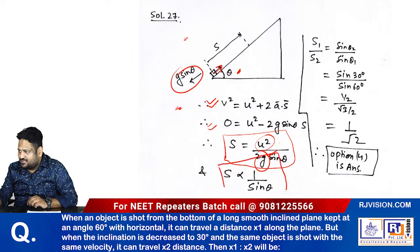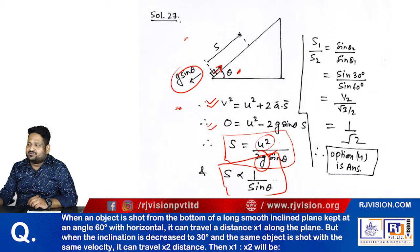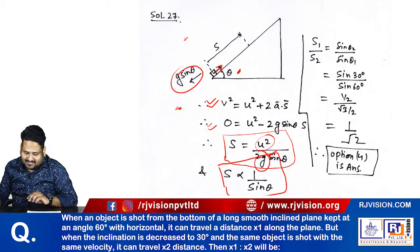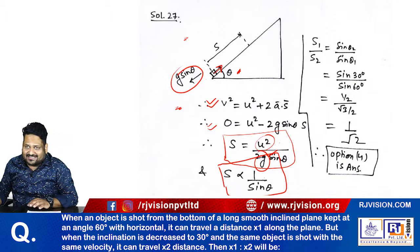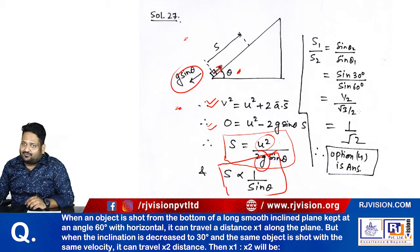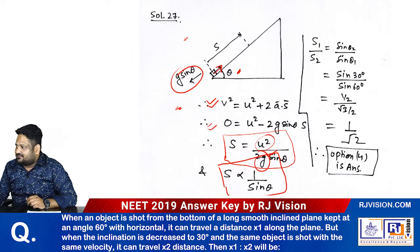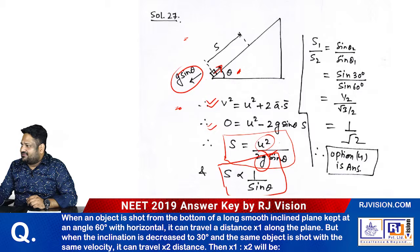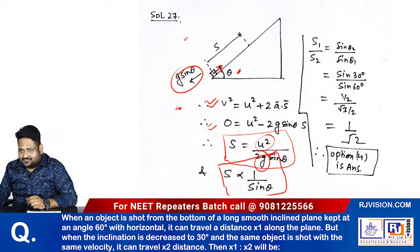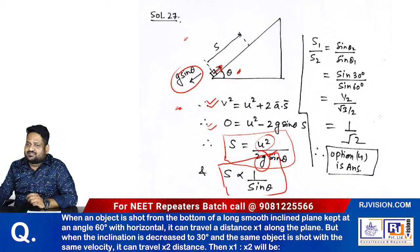It means for this particular equation, s is inversely proportional to sin theta. Here s is given in terms of x, so s1/s2, or you can say x1/x2, is equal to sin theta 2 divided by sin theta 1. Substitute the angles: theta 1 equals 60 degrees, theta 2 equals 30 degrees.